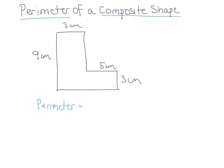Since this is not quite a rectangle or a circle or a triangle, we call it a composite shape. It's composed of basically two rectangles.